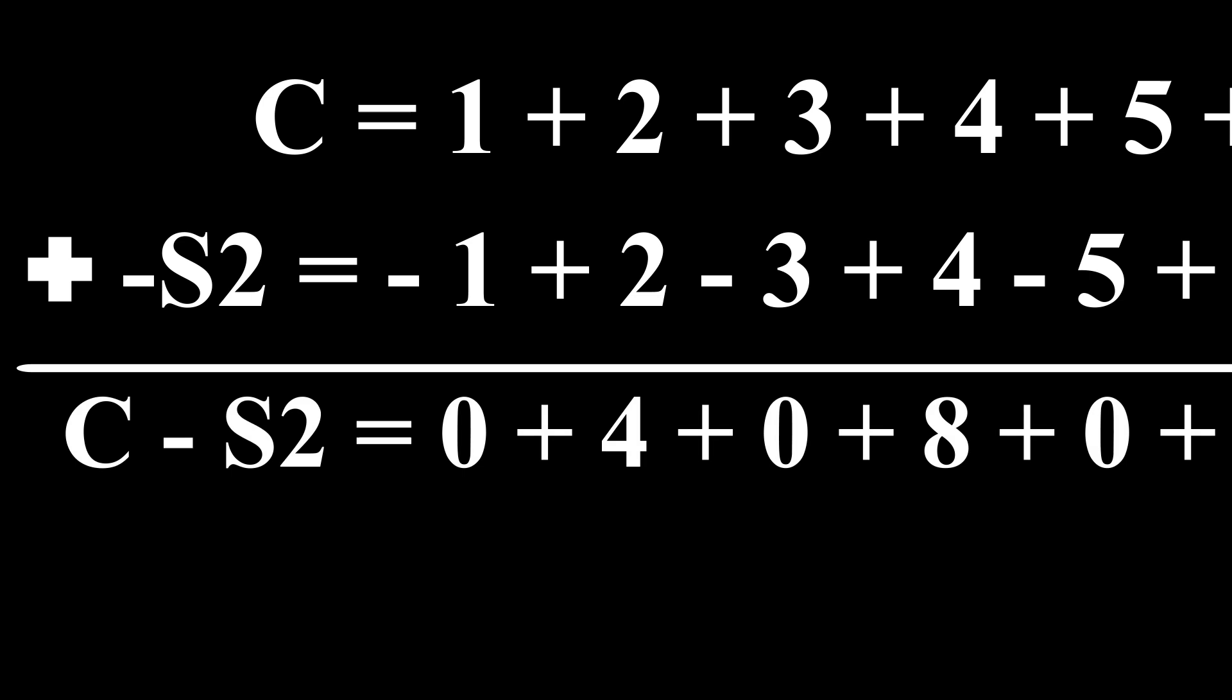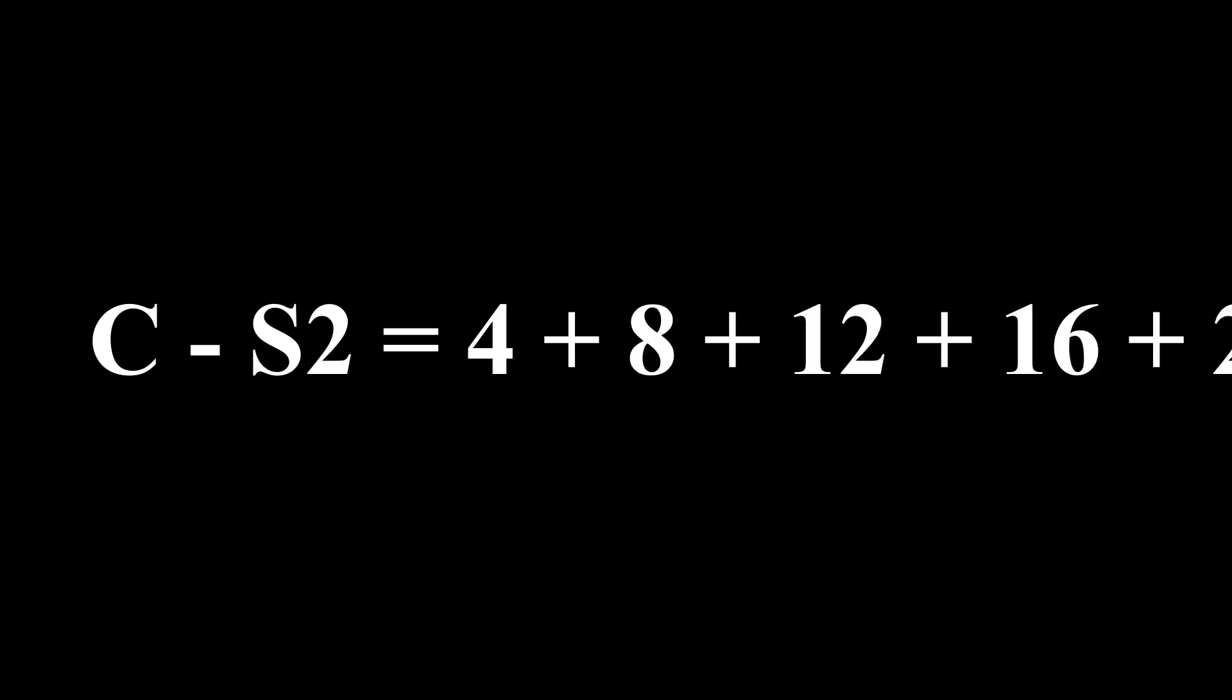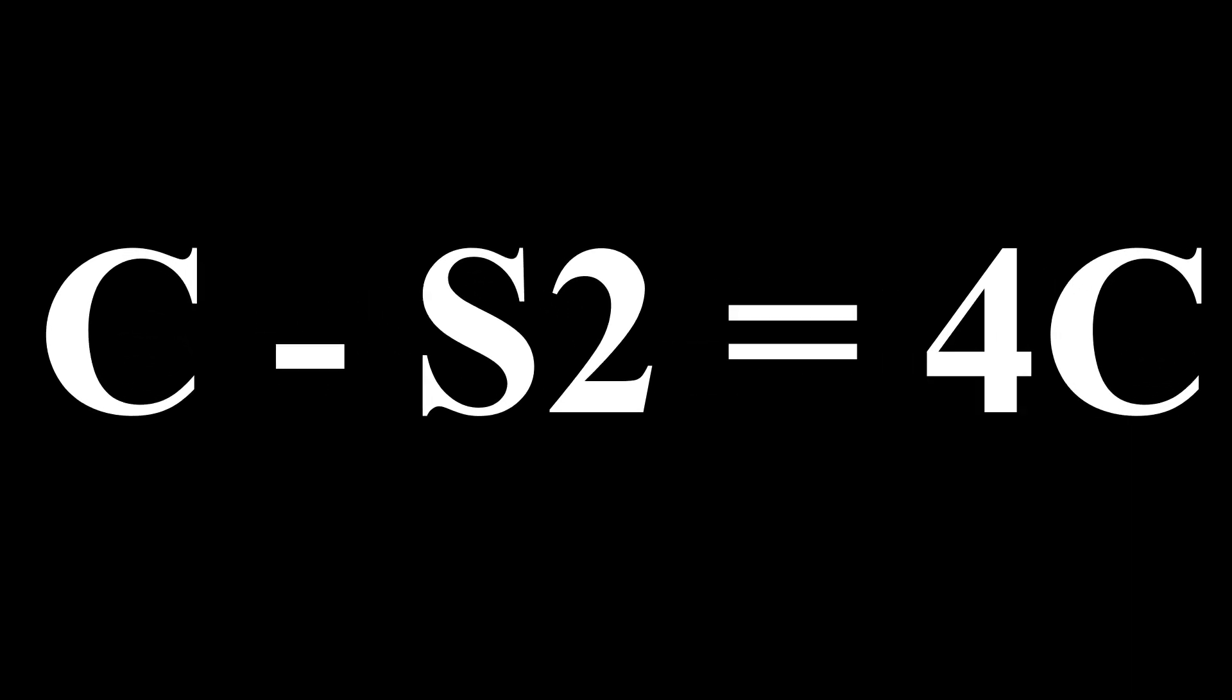By doing this, we get 0 plus 4, plus 0, plus 8, plus 0, plus 12, and so on. If we get rid of the zeros, we can see that C minus S2 is just equal to C multiplied by 4.